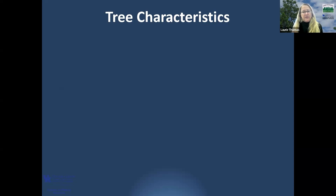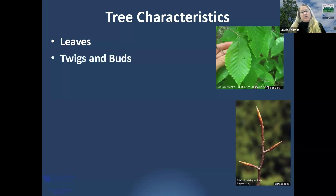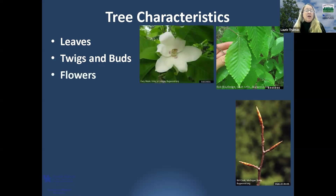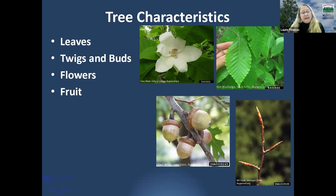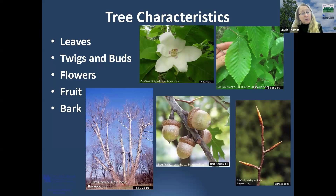When you use a dichotomous key, you'll really start looking at the characteristics of the tree because the key is going to ask you about them. With a leaf key we look at the leaves, but there are also winter tree finders so you can identify trees even without their leaves — though I'd suggest starting with leaves. You can also look at twigs and buds in winter, and flowers can be helpful, though they're seasonal. Fruit can also be useful, especially for oaks, since seeing the acorn gives you another characteristic.